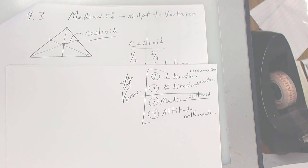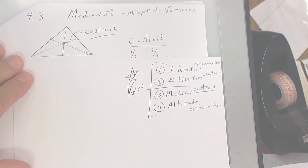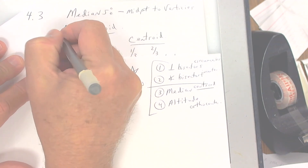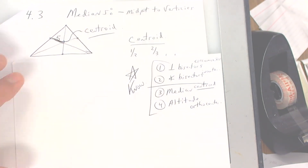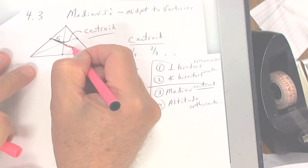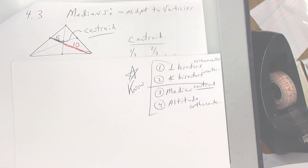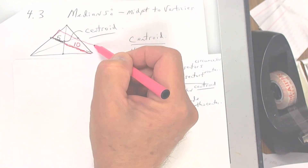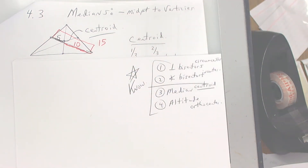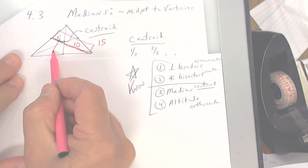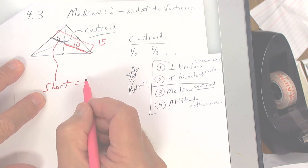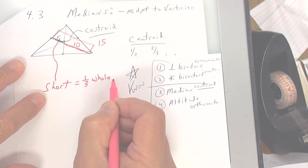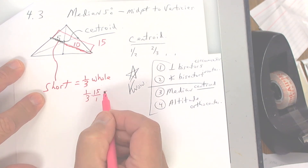I know it's a lot to memorize, but you have to study — you can't wing this. Since I scrambled the test online, you can't really work with anybody either. Now, what you need to know is that the short piece from the centroid to the midpoint might be five. If the short piece is five, the bigger piece from the centroid to the vertex is double that — ten. If the bigger piece is ten, the short piece is half of that. The whole median equals 15. The short piece equals one-third of the whole median.